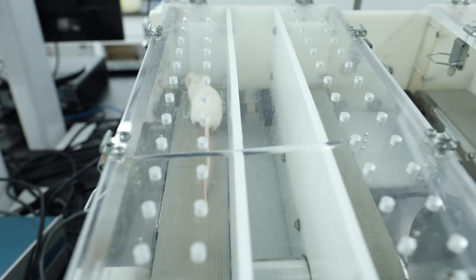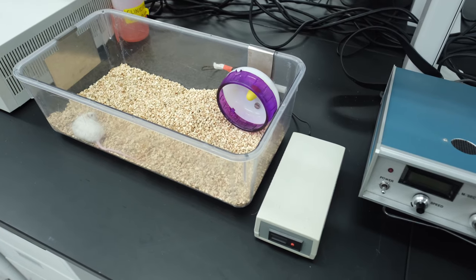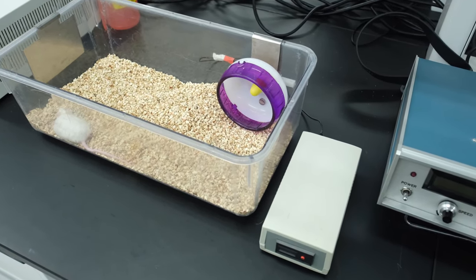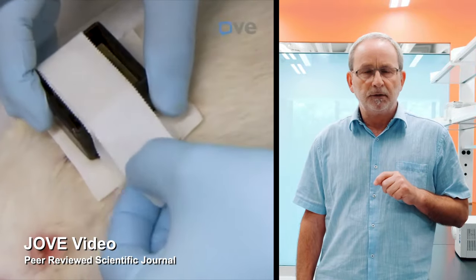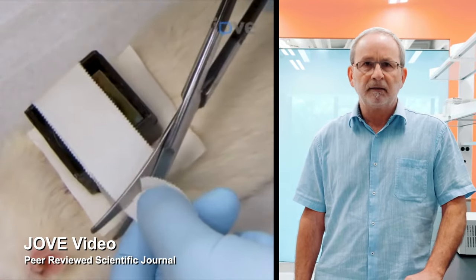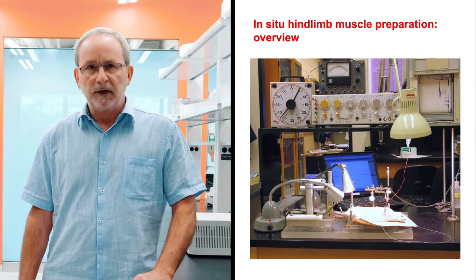If you're going to study exercise physiology research using animal models, then you need good models of exercise to analyze the muscle. There are four that I'd like to describe briefly. The first involves running on a treadmill. The second is a voluntary running wheel model. The third is a chronic exercise model similar to training called chronic contractile activity. And the fourth is called the in situ hind limb muscle preparation.